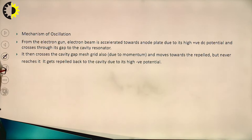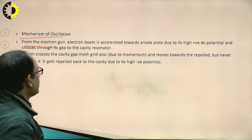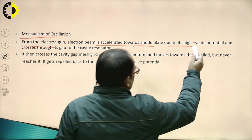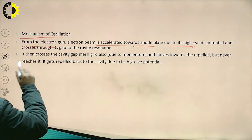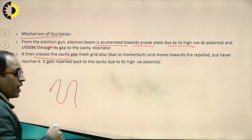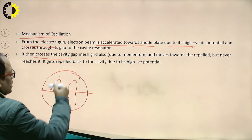The mechanism of oscillation: from the electron gun, the electron beam is released and accelerated towards the anode plate due to its high positive DC voltage, which focuses the electron beam. After focusing, it passes to the bunching cavity. This cavity has an RF input with positive and negative cycles.